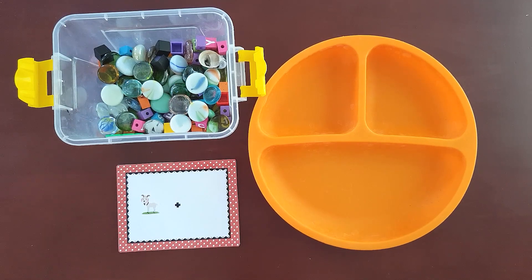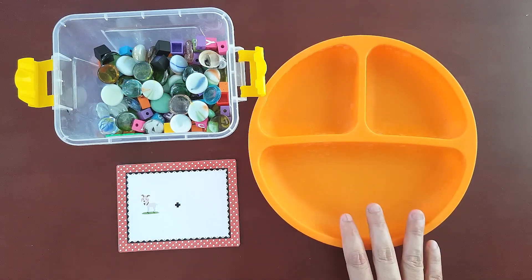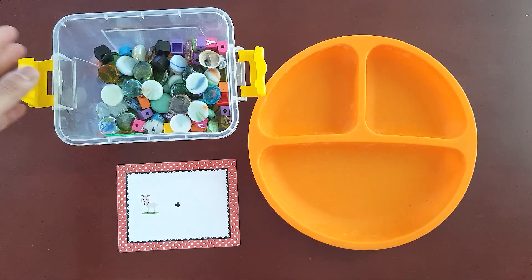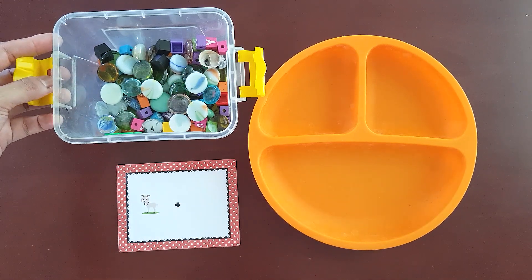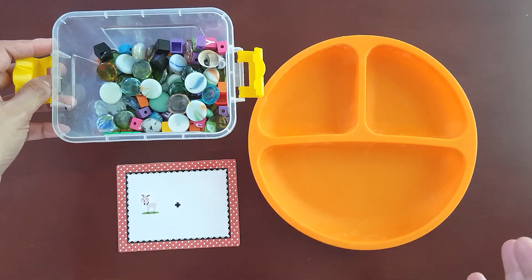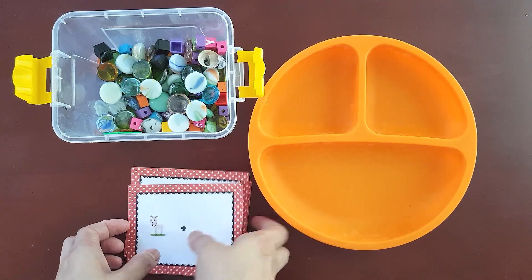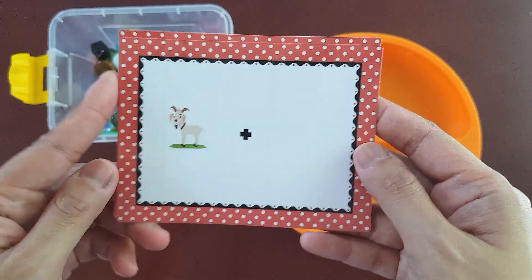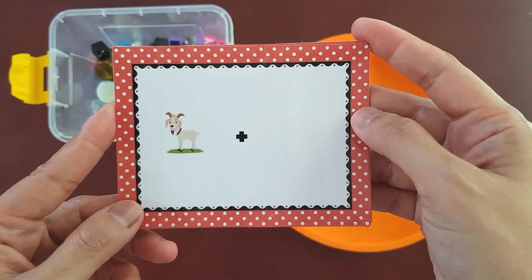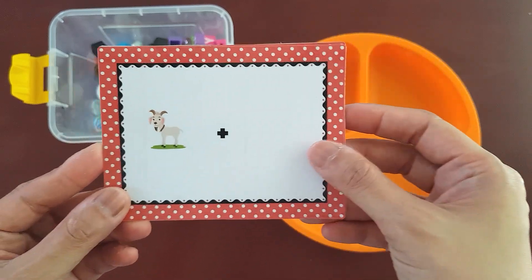So what we need here in this activity is a plate with three compartments. We need three compartments so they can see how addition happens. Then we have here the counters. You can use rocks or any counters available in your house. And then we have the addition cards. These are all free, just refer to the link in the description box below. So like for example, this one.